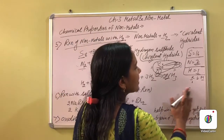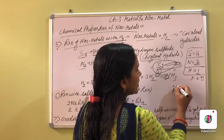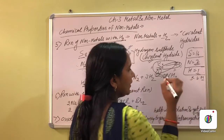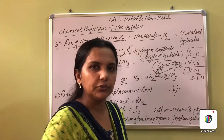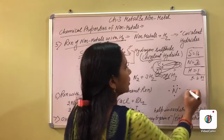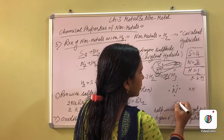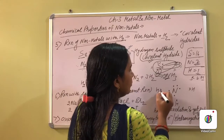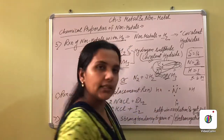If we draw the electron dot structure of nitrogen, it shows 5 electrons. Then there is hydrogen 1, hydrogen 2, and hydrogen 3 — these are the hydrogen atoms with their electrons that will share with nitrogen.